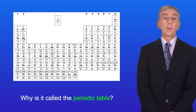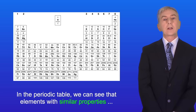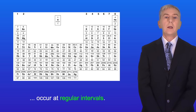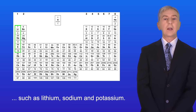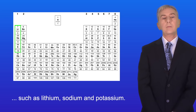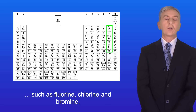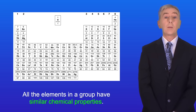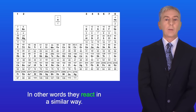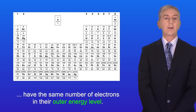So why is it called the periodic table? The word 'periodic' means occurring at regular intervals, and in the periodic table we can see that elements with similar properties occur at regular intervals. For example, group 1 consists of highly reactive metals such as lithium, sodium and potassium. On the other side of the table, group 7 consists of highly reactive non-metals such as fluorine, chlorine and bromine. All the elements in a group have similar chemical properties — they react in a similar way — because they all have the same number of electrons in their outer energy level.